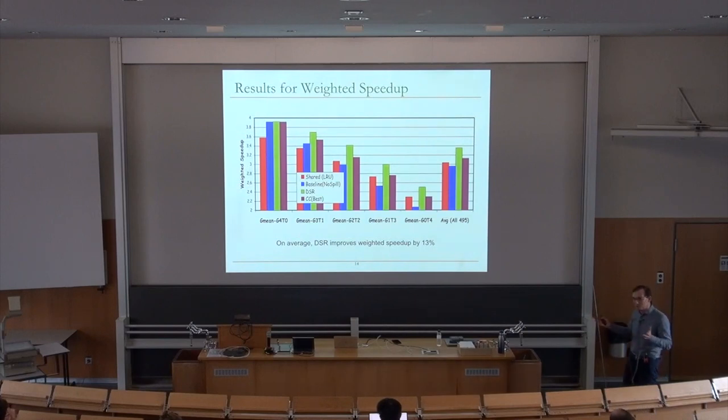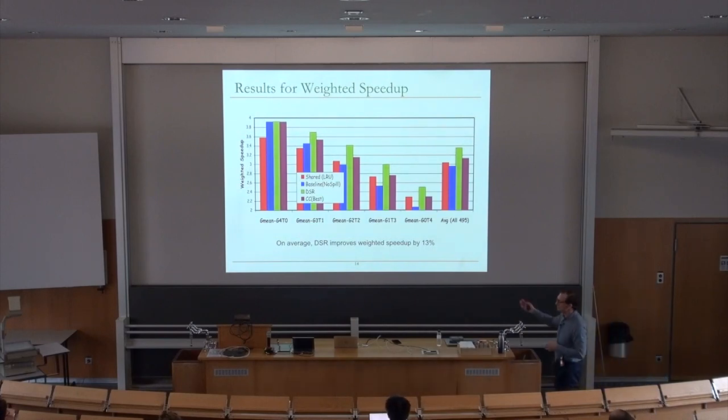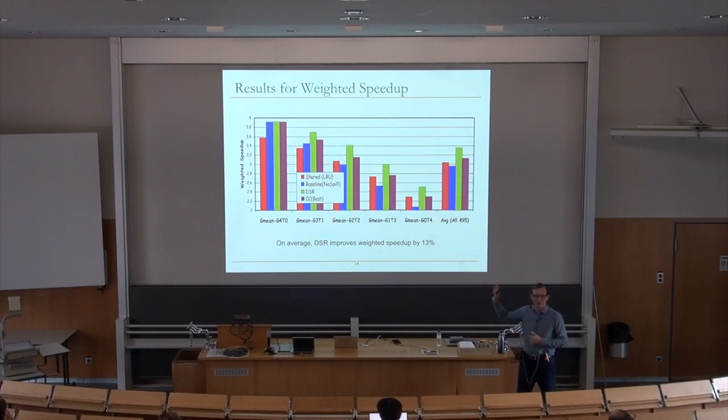The previously proposed cooperative caching policy doesn't account for the benefit of spilling versus receiving and randomly picks lines to spill. It doesn't classify caches as spillers and receivers. Dynamic spill-receive is a different approach: starting from private caches and intelligently spilling to neighboring caches. A version of this is actually implemented in some systems.